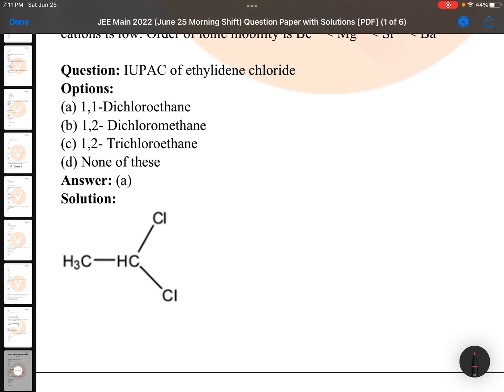IUPAC of ethylidine chloride: This structure has two carbons, first carbon is having two chlorine groups, so 1,1-dichloroethane. Very simple question, easy question.